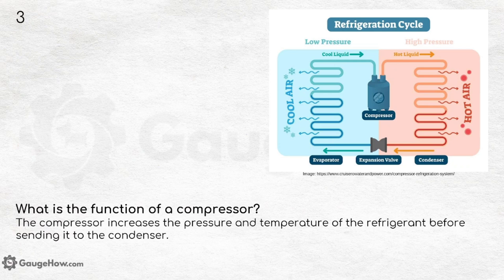What is the function of a compressor? The compressor increases the pressure and temperature of the refrigerant before sending it to the condenser. The refrigeration cycle works by compressing and condensing a refrigerant, then expanding and evaporating it to absorb heat. This continuous cycle transfers heat from one location to another, cooling the desired space.